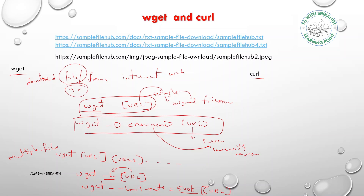If you want to download all files from a particular website recursively, use: wget -r [url]. This downloads all files completely, but it is very dangerous. If the website has thousands of files, you don't know how many files it contains, and downloading all of them recursively can be a huge burden on your hard disk. Only use this if you know the website details.